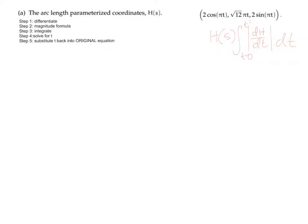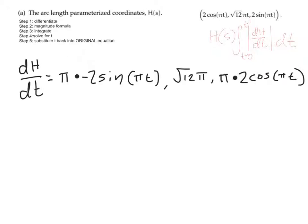Let's start with differentiating. If we differentiate 2cos(πt), we have to use the chain rule. We differentiate inside the brackets to get π, then multiply by the derivative of the outside: cos becomes minus sine, and with the 2 we get minus 2sine. We keep inside the brackets the same, so we get π × minus 2sin(πt). For √12·πt, we just drop the t to get √12·π.